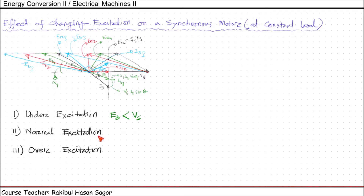That means the motor operates at lagging power factor. The motor is said to be normally excited if the field excitation is such that Eb is equal to Vs. And the motor is said to be over excited when we have a field excitation such that Eb is greater than the supply voltage Vs. So it can be concluded that if the synchronous motor is under excited, it has a lagging power factor. As the excitation is increased, the power factor improves till it becomes unity at normal excitation. Under such conditions, the current drawn from the supply is minimum. If the excitation is further increased, the motor power factor becomes leading, and that occurs under over excited condition.